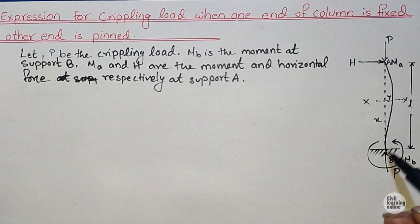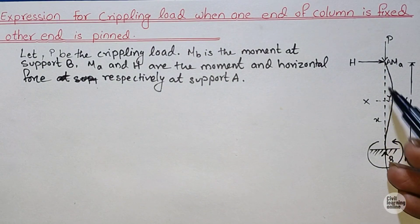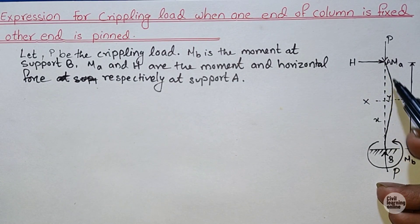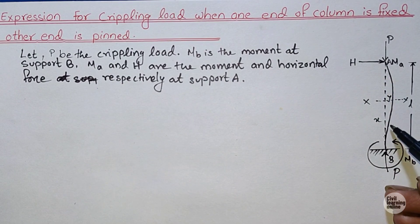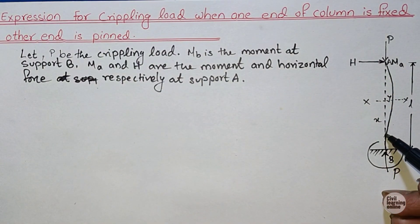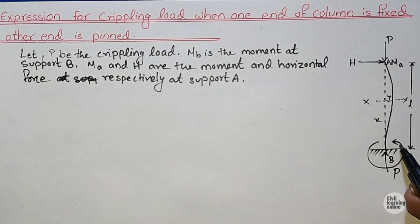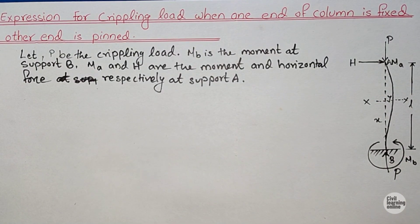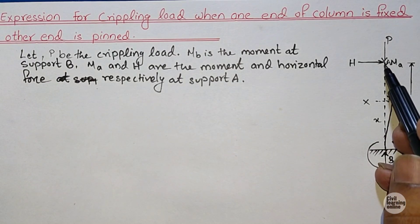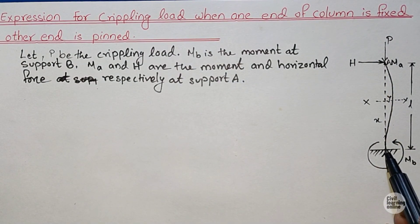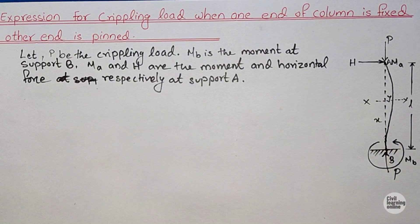We consider a section XX at distance X from support B, where the deflection of the column is Y from the original position. The dotted line represents the original position. Due to the crippling load, the long column is deflected and takes the shape of a curve. At the fixed support there is no deflection, so only moment MB is generated there. The deflection diagram is straight near support B and then curves, a little away from support B, similar to the case when both ends are fixed.